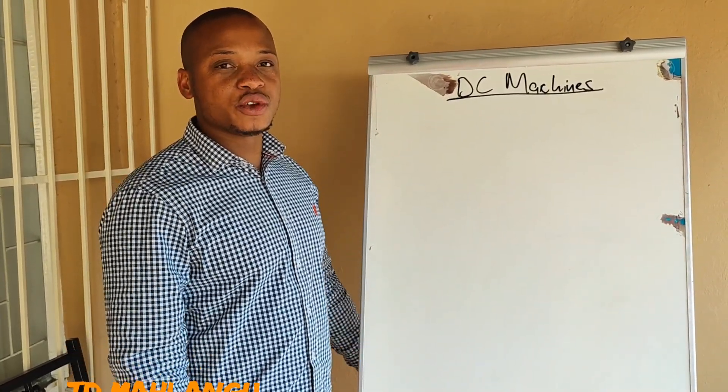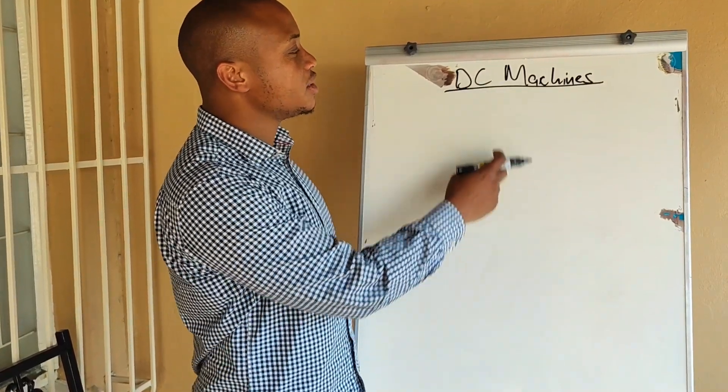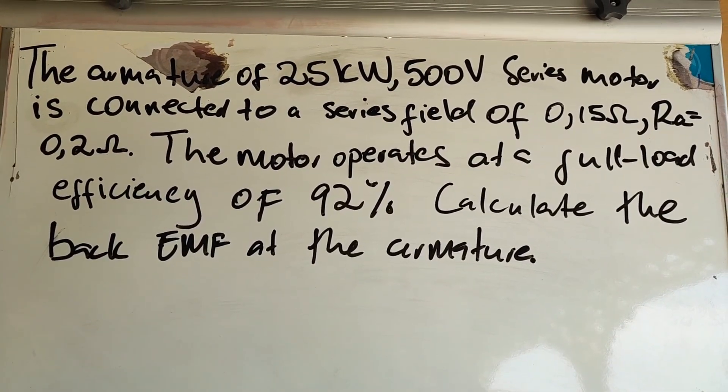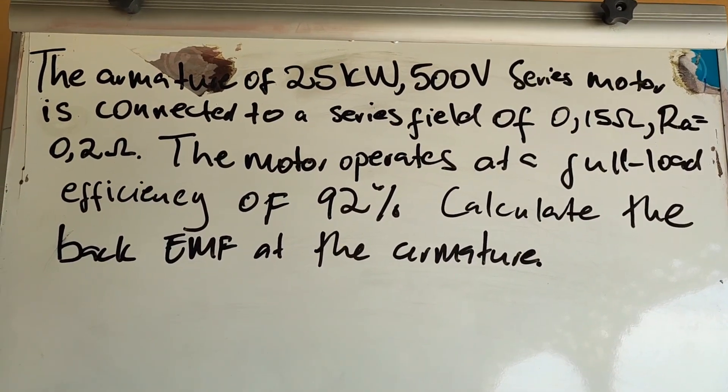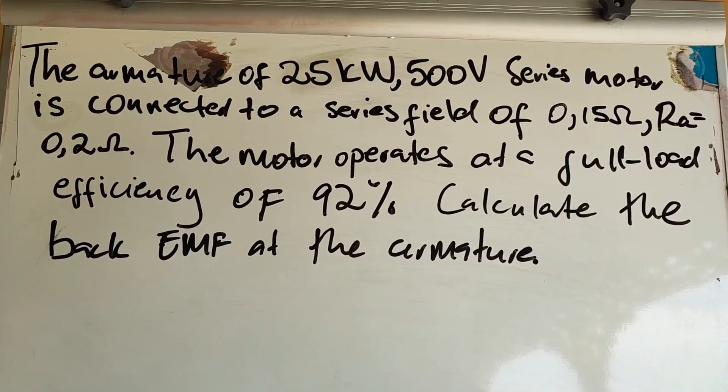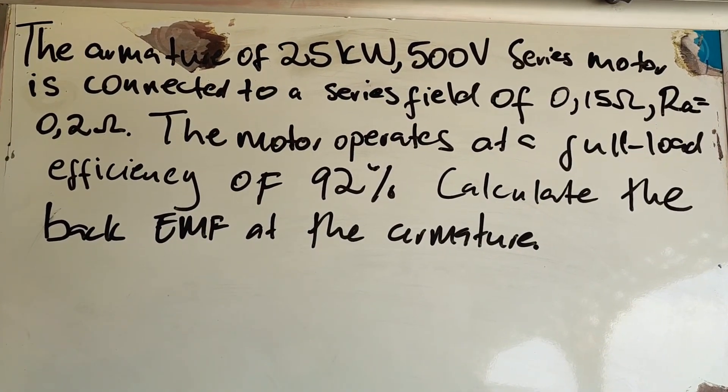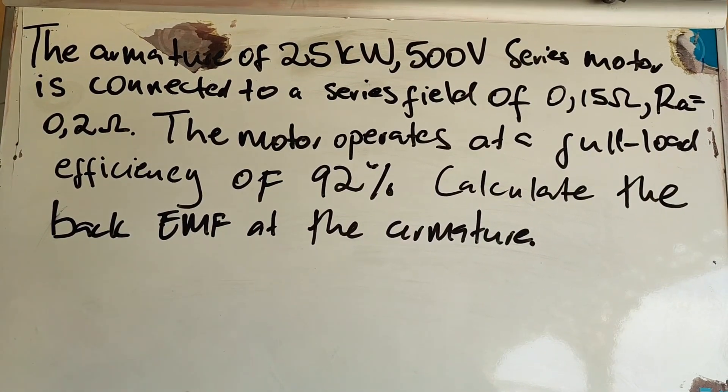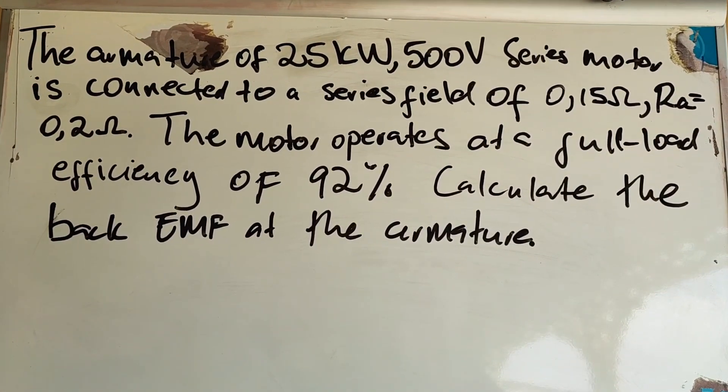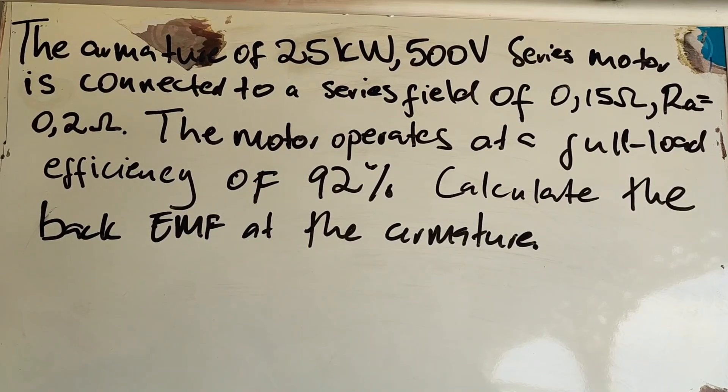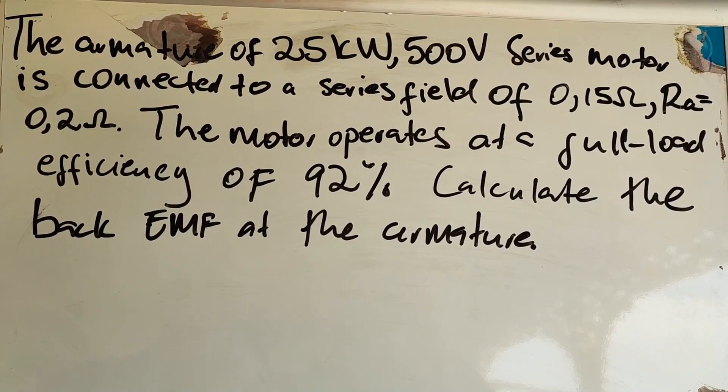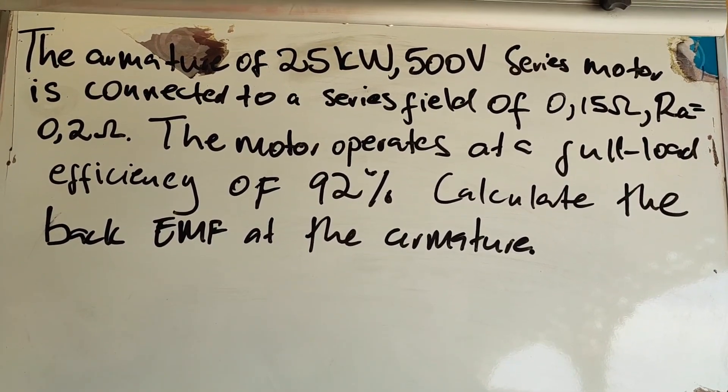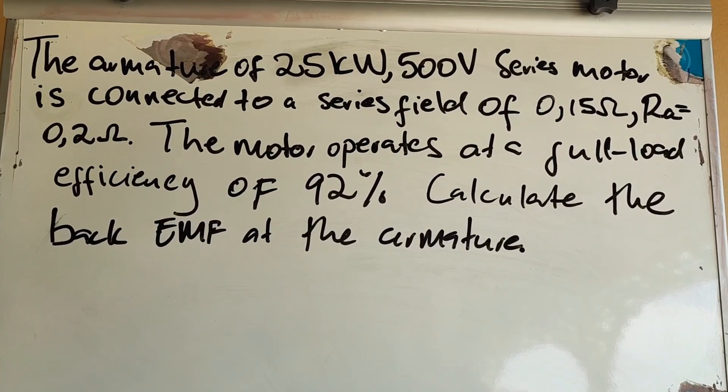So in today's video we'll be looking at module number one which is DC machines. The armature of a 25 kilowatts 500 volt series connected motor is connected to a series field of 0.15 ohms, armature resistance of 0.2 ohms. The motor operates at a full load efficiency of 92%. Calculate the back EMF at the armature.